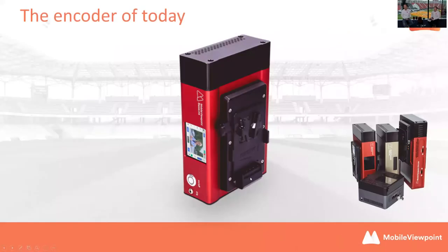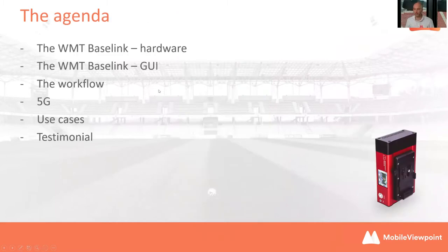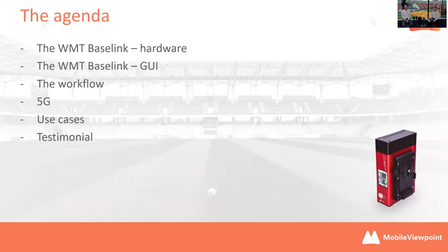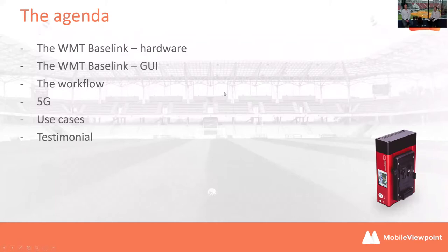Here you can see the Baselink, the device of today. On the right side you can see our other mobile encoders, confirming it's the mid-range encoder — not the smallest and not the biggest. The agenda for today: we're going to discuss the hardware, show how it looks, show screenshots of the GUI, demonstrate the workflow, give a 5G update, cover some use cases, and share a short testimonial from one of our clients.